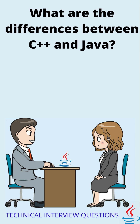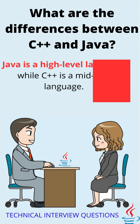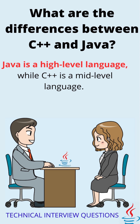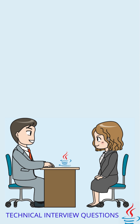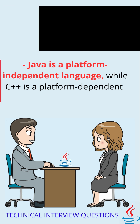Let's talk about the difference between C and Java. There are quite a few differences between these two languages, but here are some of the key differences. Java is a high-level language, while C is a mid-level language. Java is a platform-independent language, while C is a platform-dependent language.